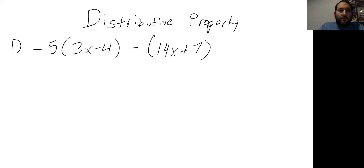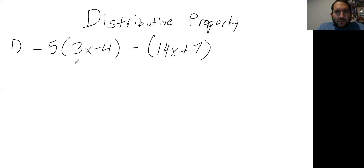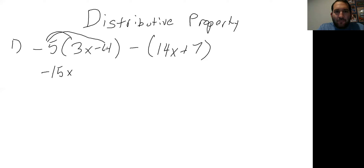So for problem number one, we have negative five, parentheses 3x minus 4, minus in parentheses 14x plus 7. We want to simplify this, and the first step to simplifying is to distribute. So we're going to look at each of the parentheses — whatever is in front, we distribute. The first set has a negative 5. Make sure that negative stays connected with the 5. So negative 5 times 3x is negative 15x, and negative 5 times negative 4 — a negative times a negative gives a positive — so that's positive 20.